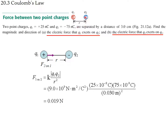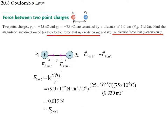We find the force magnitude is 0.019 N. For part (a), this force is felt by q1 and points to the left — in the negative x direction. For part (b), the force felt by q2 is the same magnitude but opposite direction, pointing to the right — positive x. As vectors, one is the negative of the other; without the arrow, F denotes magnitude only.